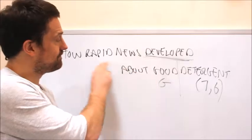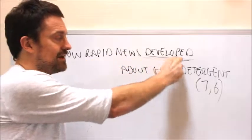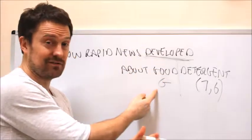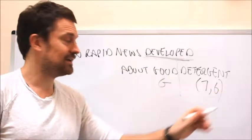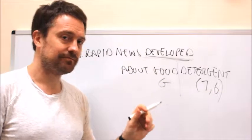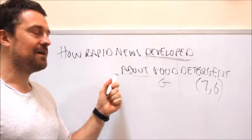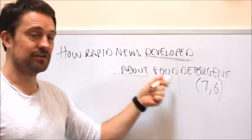So about good, how rapid news developed - make an anagram of about good around this single letter meaning detergent. Now the one thing you can be sure of - this is very specific - if this said developed after good or developed before good detergent, the G would then be either at the end if it was after, or the other end if it was before.